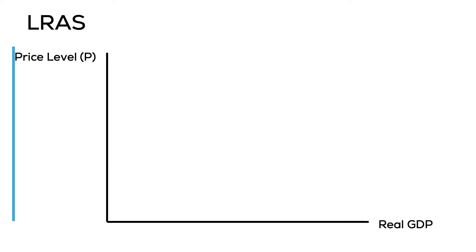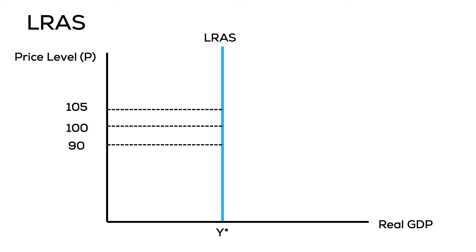That means we represent our long-run aggregate supply curve as a completely vertical line, showing that no matter what the price level in the economy is, we're still going to produce Y*. If the price level is at 90 and then moves up to 100, all input and output prices adjust so that the economy continues to produce at Y*.